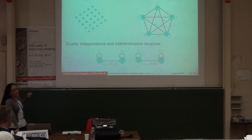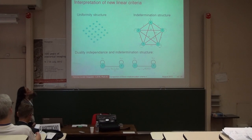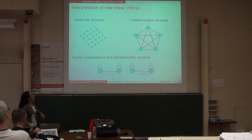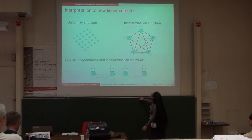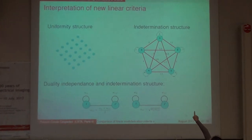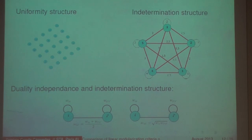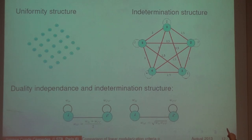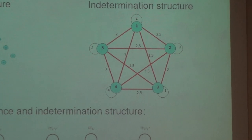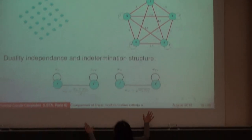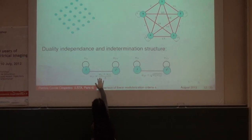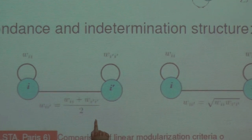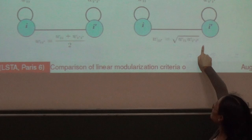To understand these criteria, here are some examples. A graph following the uniform interior structure is like a lattice or a grid, where all nodes have the same degree. A graph which has the undetermination structure has an important property: if we take any pair of nodes, for example nodes two and three, they have loops one and three, and the edge connecting them has a weight which is the arithmetic mean of the loops. In the general formula, the undetermination situation uses the arithmetic mean, while the independence situation uses the geometric mean.